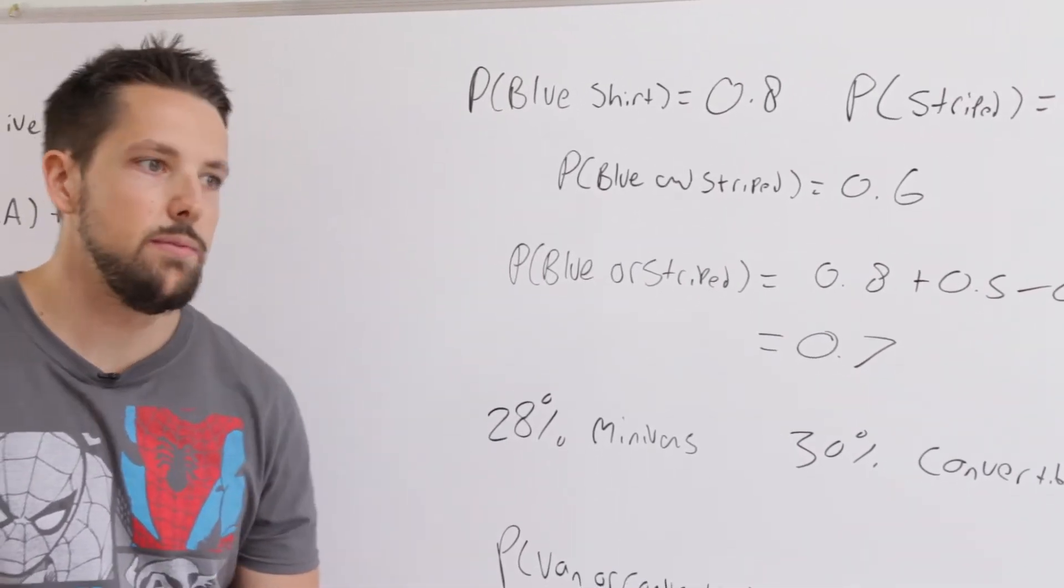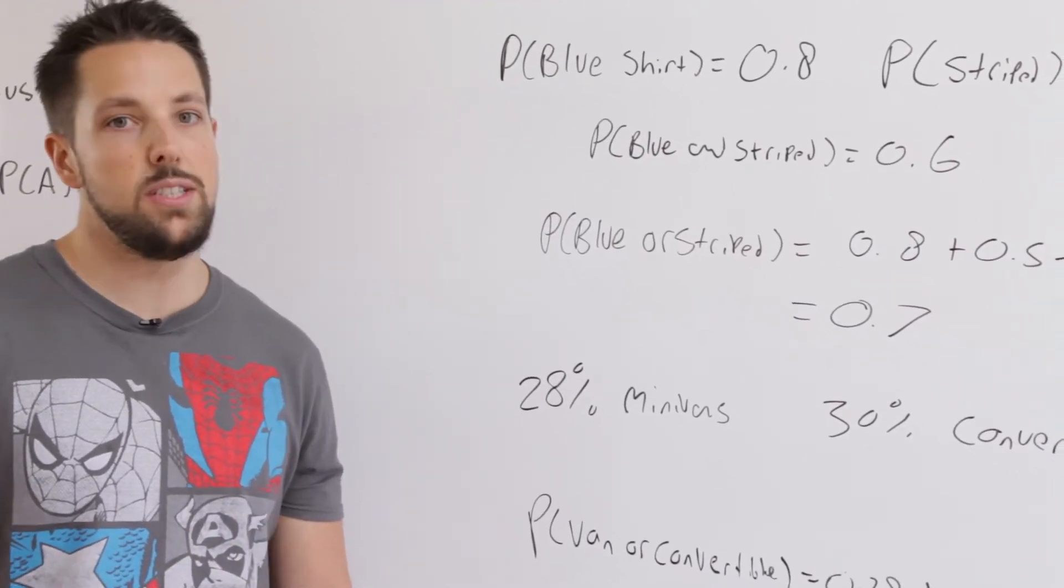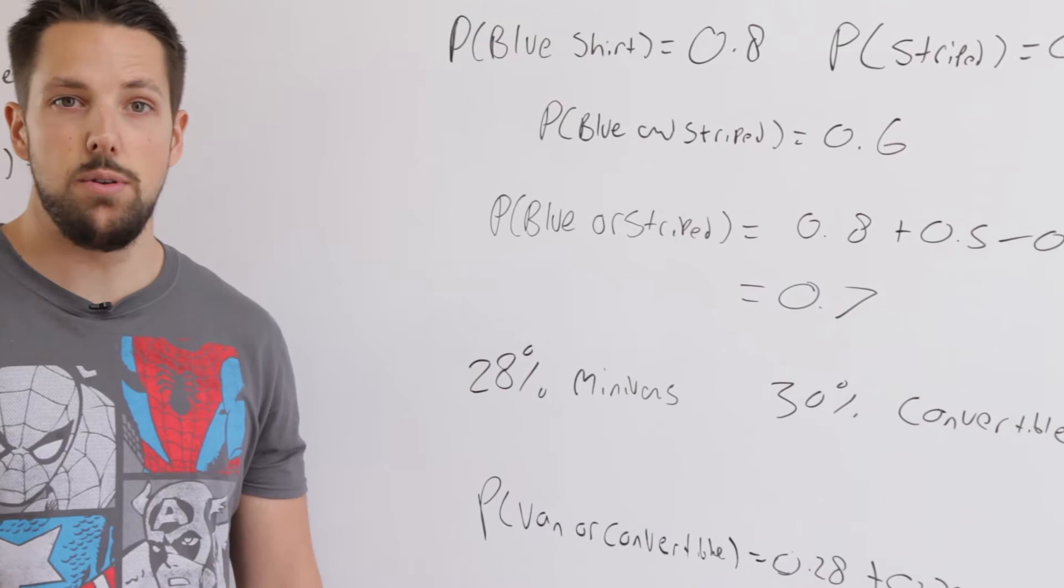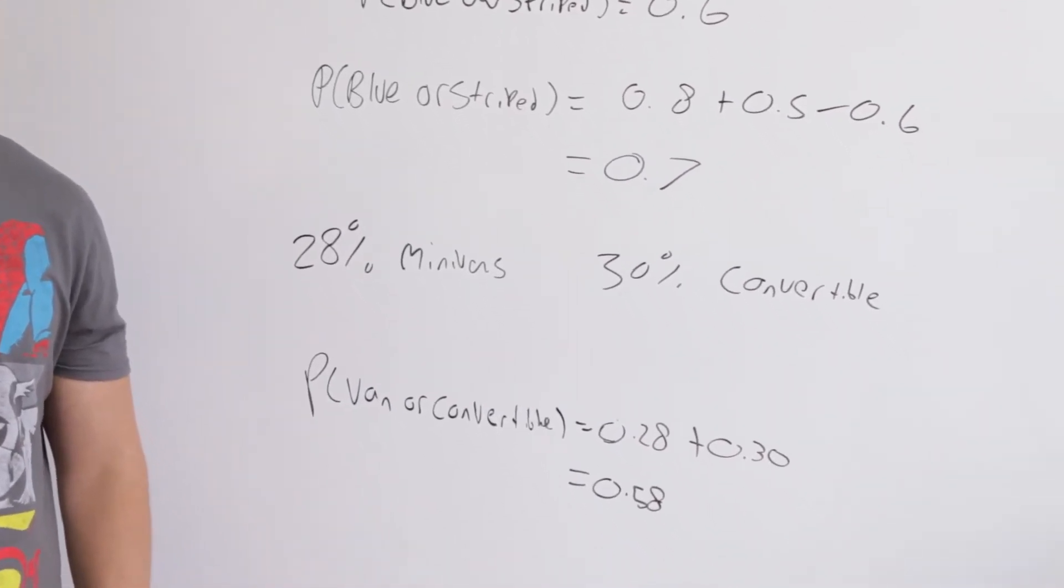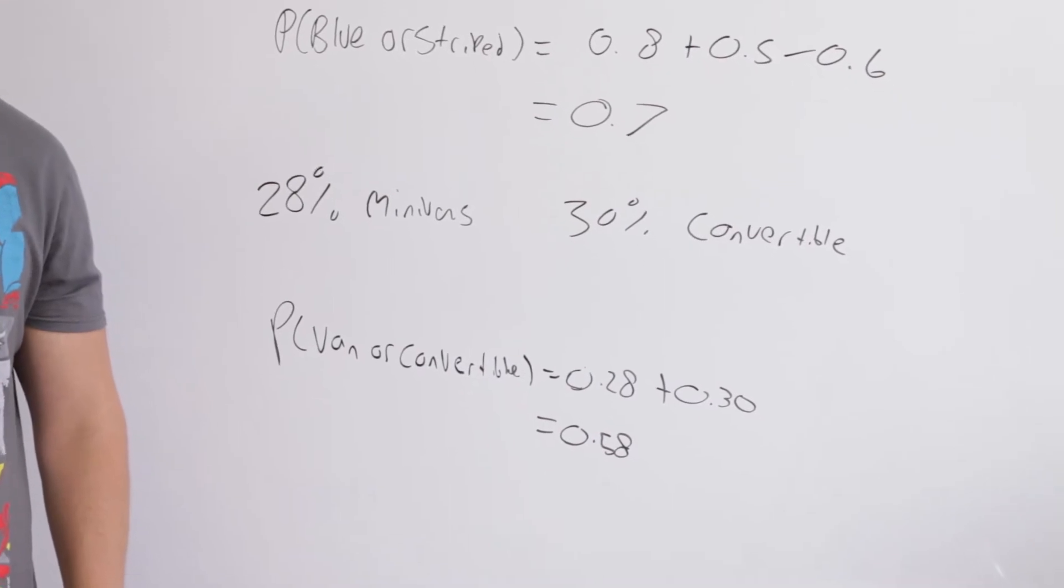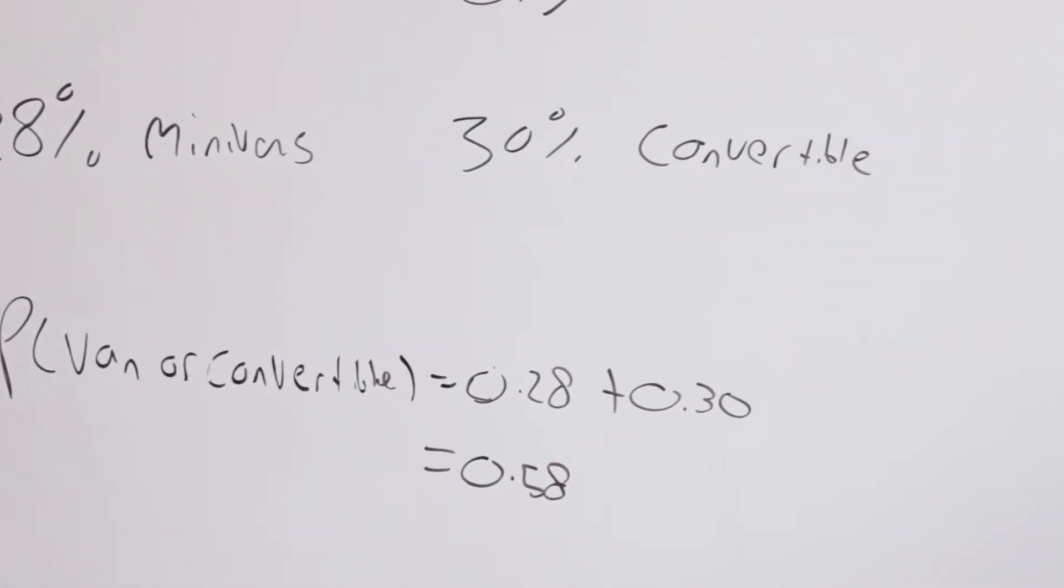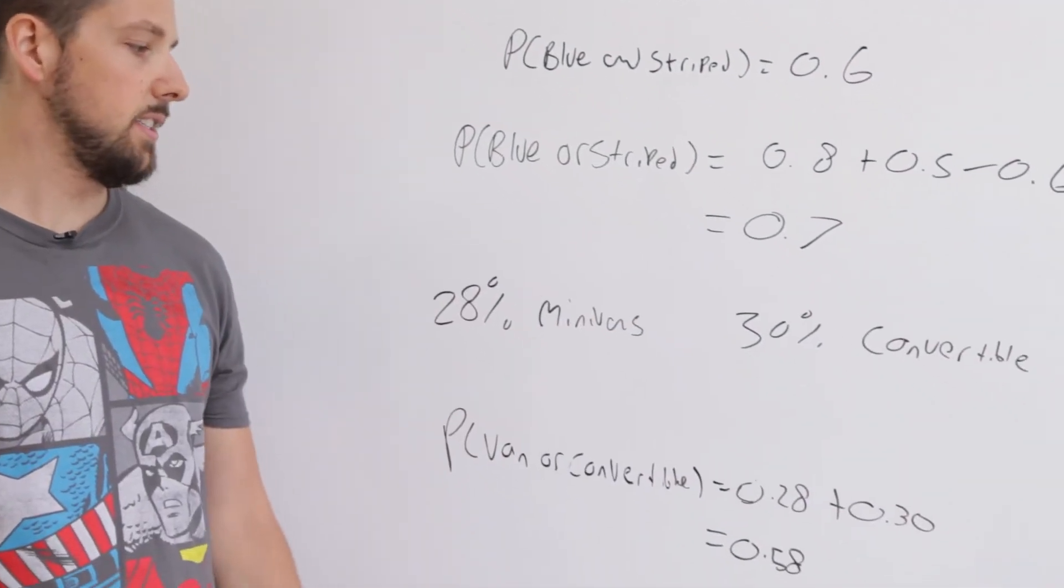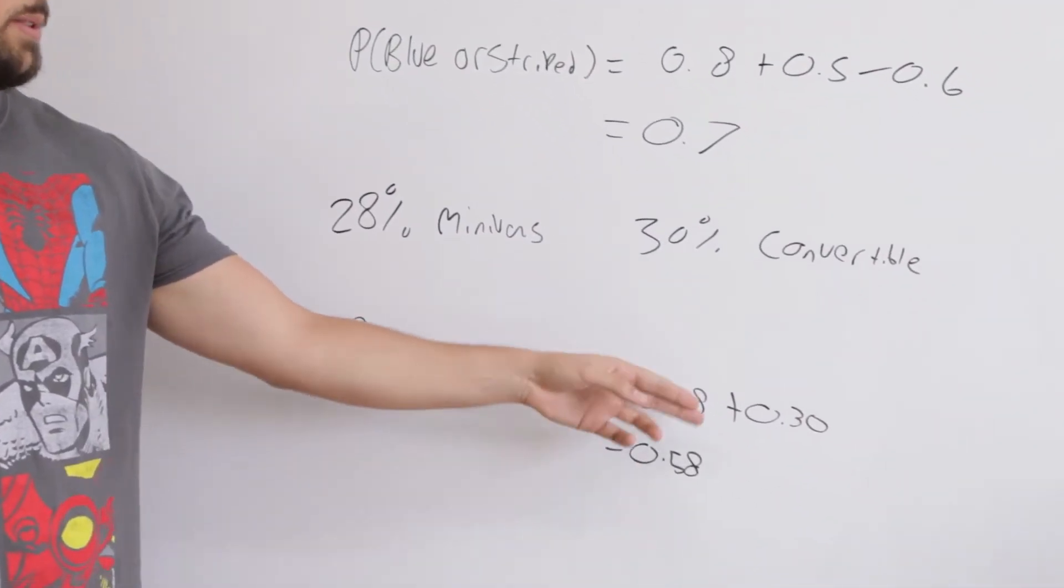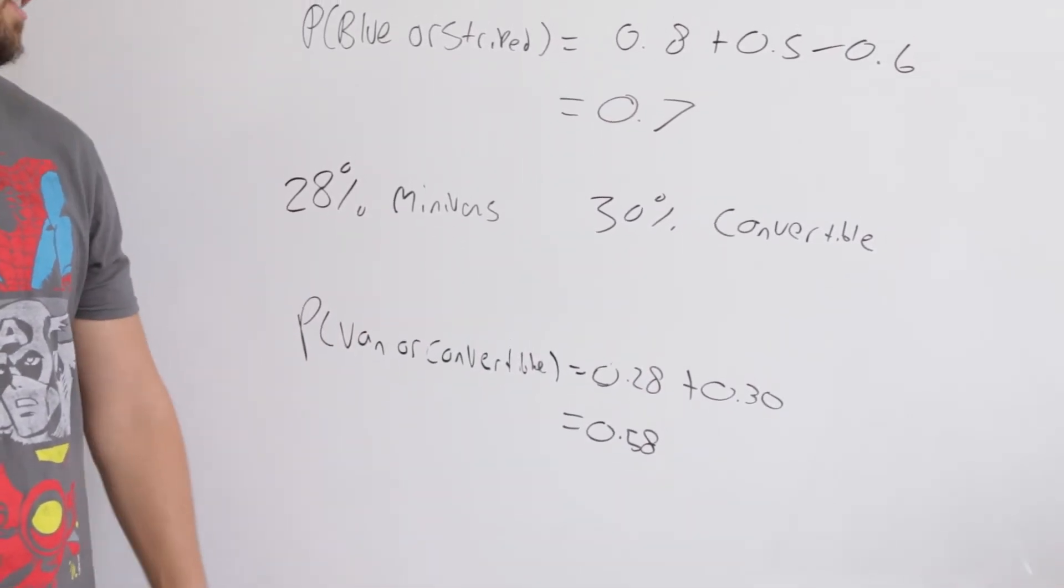Let's go to another example. Say at a car dealership, 30% of the cars are convertibles, 28% are minivans. Is this mutually exclusive or non-mutually exclusive? Well, you can't have a minivan that's also a convertible, so that means it's mutually exclusive. To find the probability that you get a minivan or a convertible, you just add up the two probabilities. So it equals 0.28 plus 0.3, which equals 0.58, which means you have a 58% chance of getting a van or a convertible.